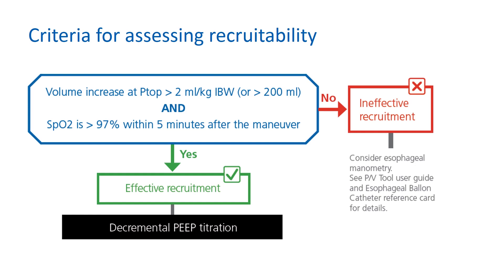If the volume increase is greater than 2 mL per kg ideal body weight or greater than 200 mL, and the SpO2 is greater than 97% within 5 minutes after the maneuver, the maneuver is deemed to be effective. Perform decremental PEEP titration. If one criterion was not met, recruitment is not effective. Consider including esophageal manometry in your recruitment strategy.